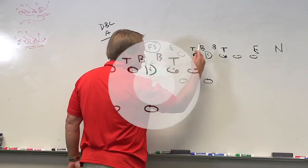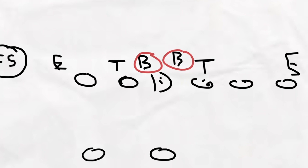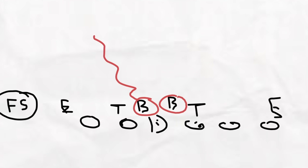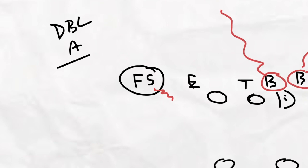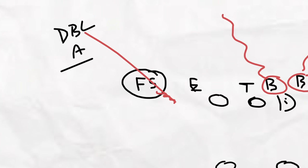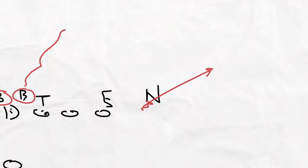A lot of the times the two inside linebackers act like they're blitzing, but they bluff and run out and play coverage. The free safety's acting like he's blitzing and he bluffs and runs and covers the flat. The nickel's acting like he's blitzing and he drops into the flat.